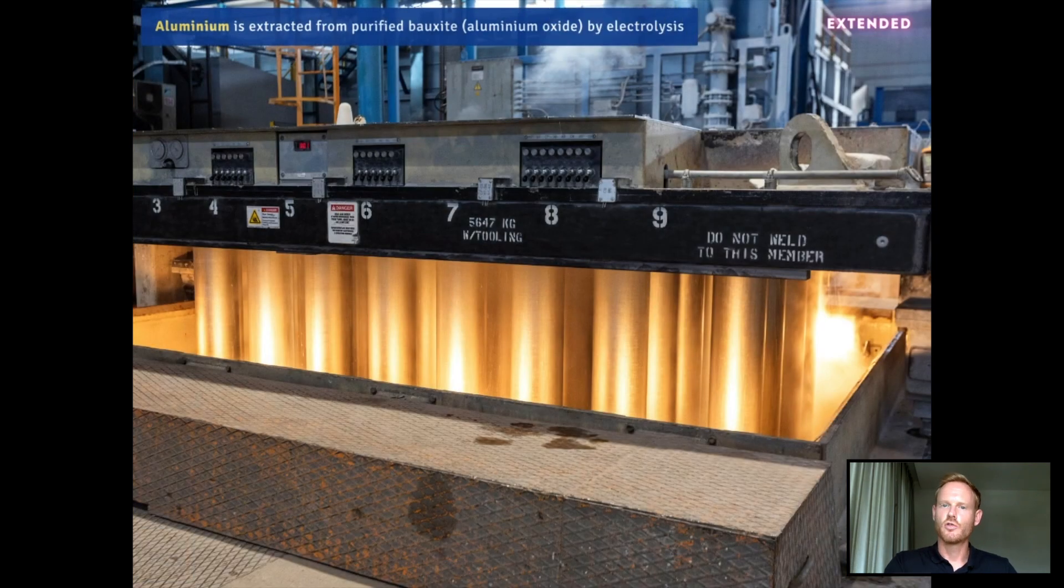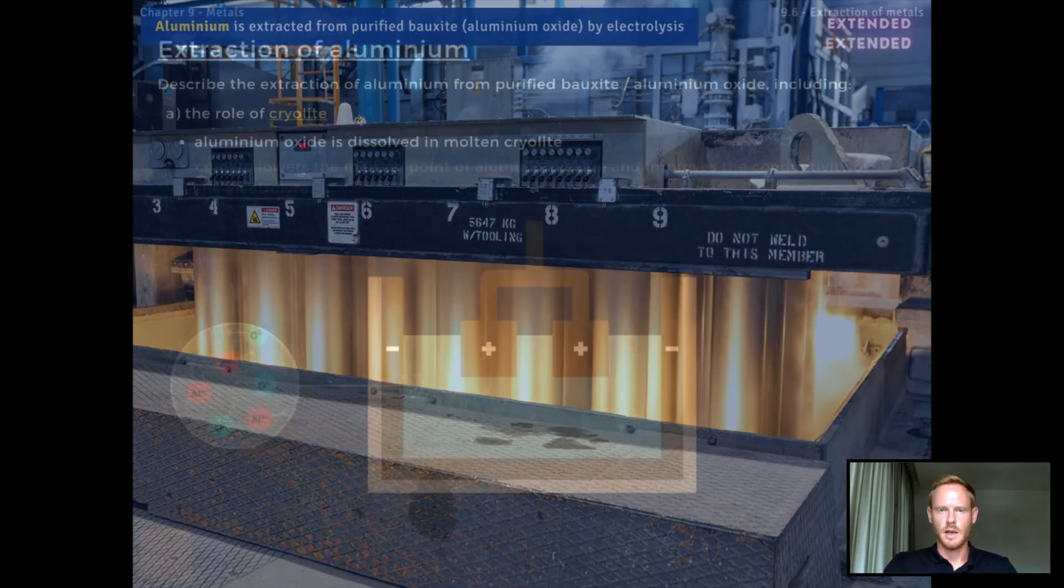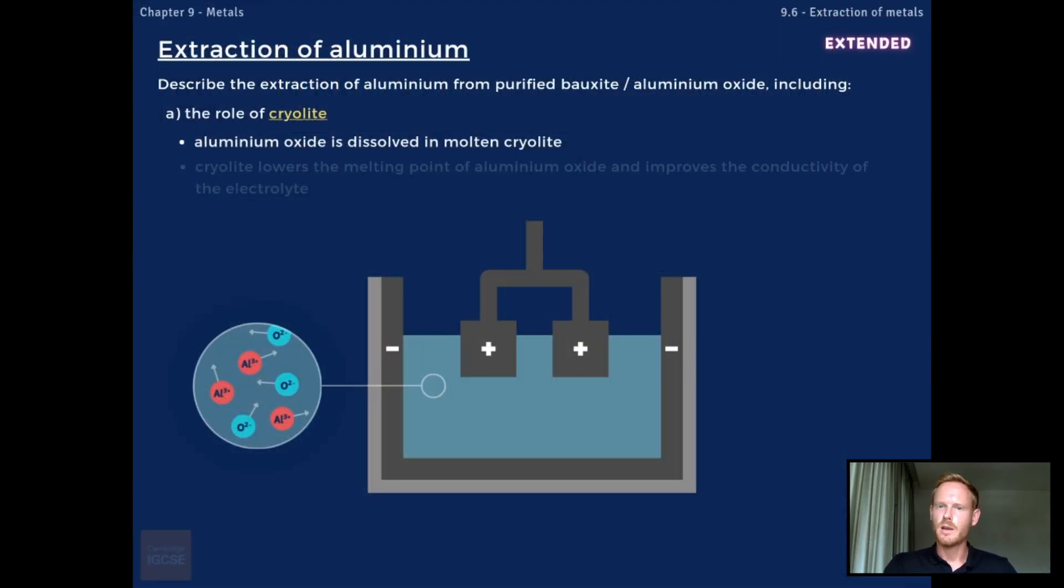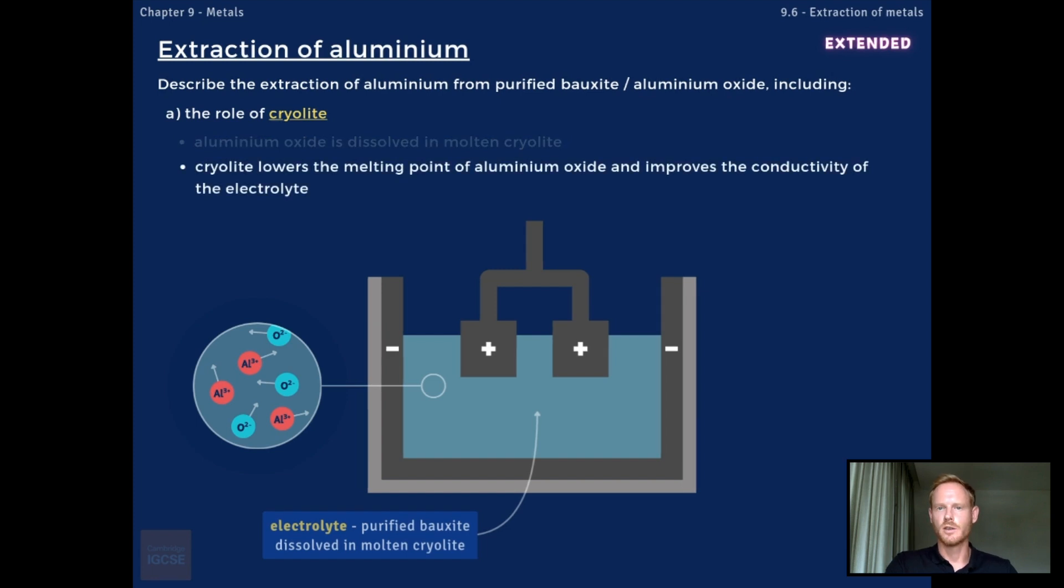Finally, you need to describe the extraction of aluminium from purified bauxite by electrolysis. For everything you need to know on electrolysis, see topic 4.1, link below. Now, before it can be electrolyzed, the aluminium oxide must be molten, because only in a liquid state are the ions within the compound free to move to their respective electrodes. Because aluminium oxide has a high melting point, it's first dissolved in another aluminium compound called cryolite. Cryolite significantly lowers the melting point of aluminium oxide and improves the conductivity of the electrolyte.